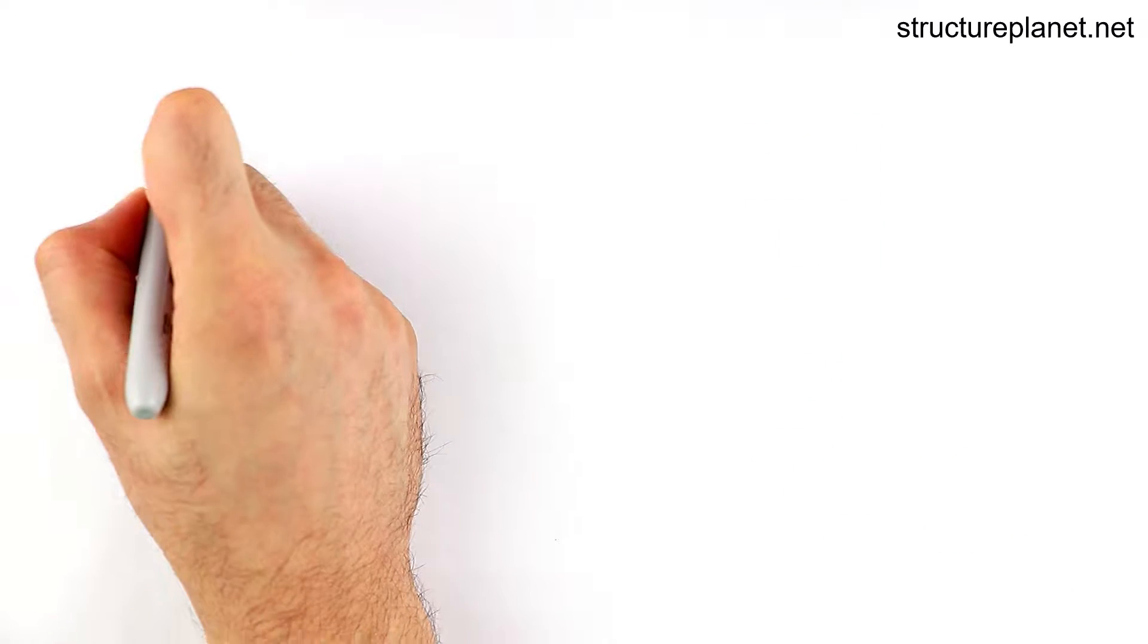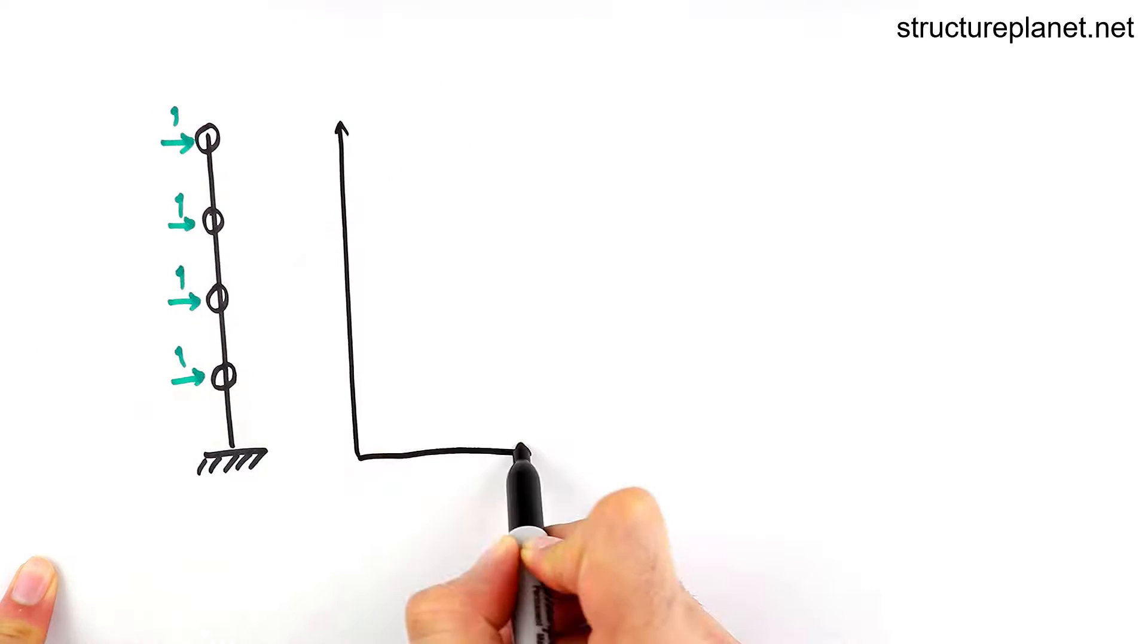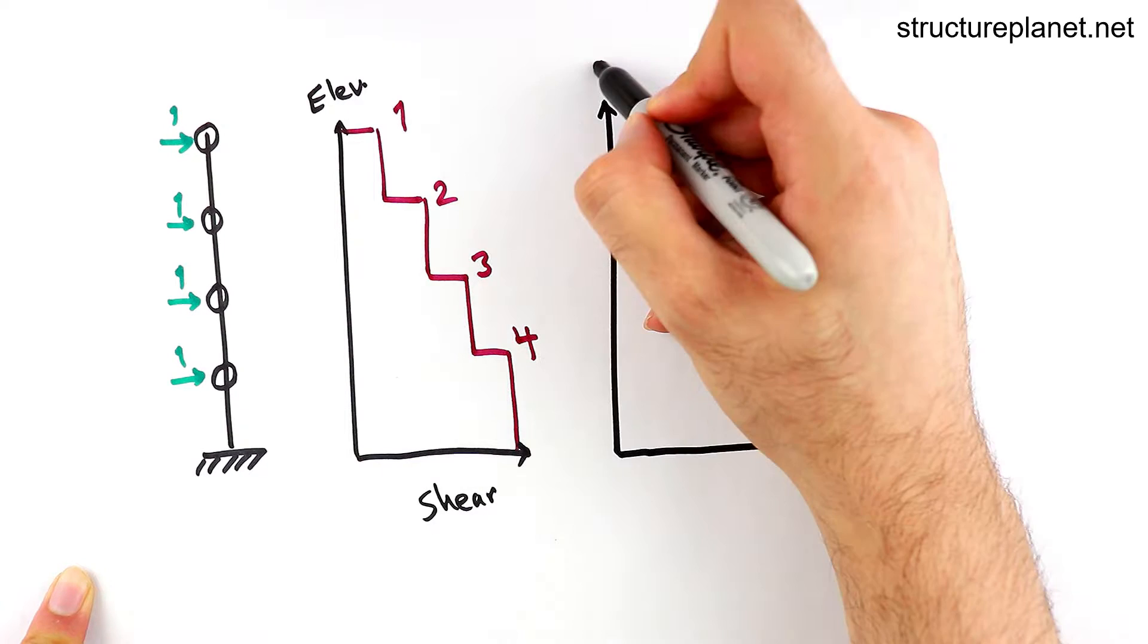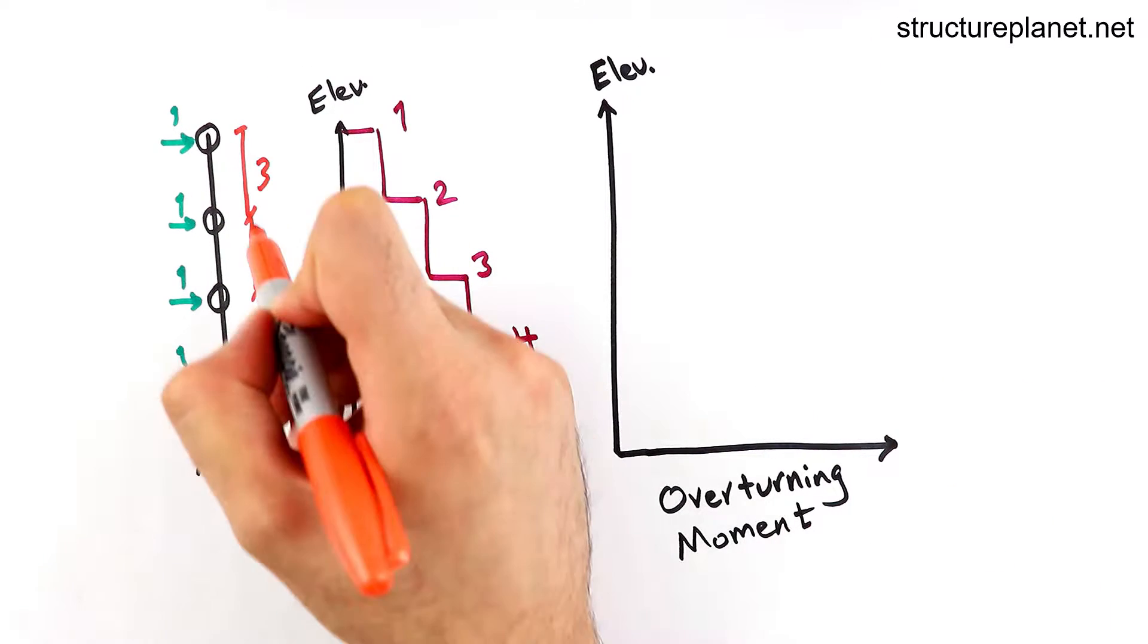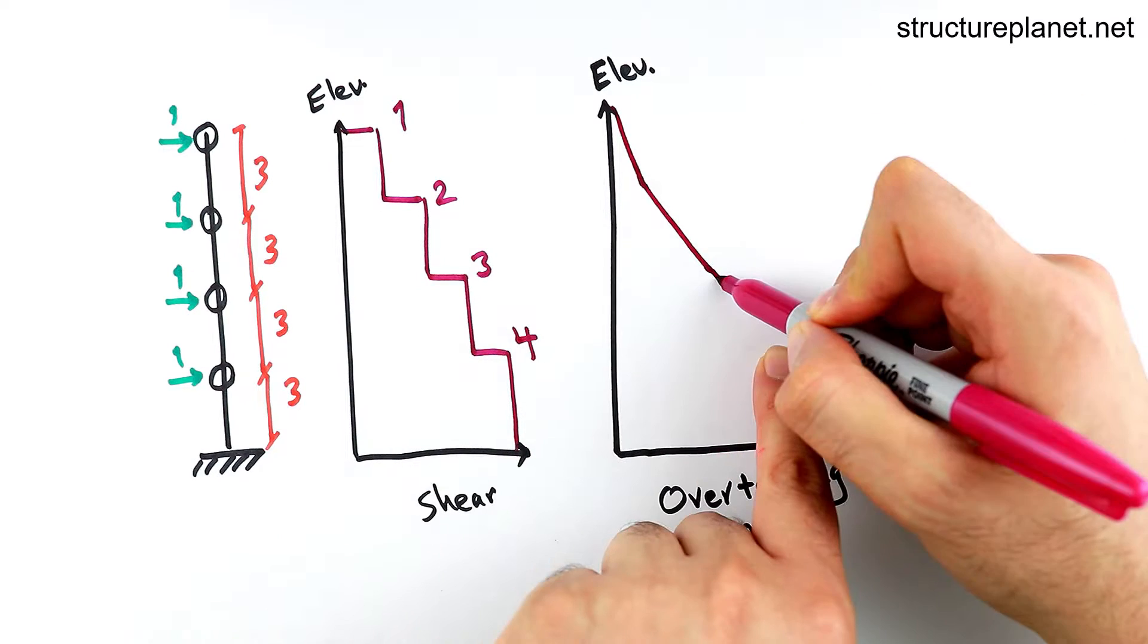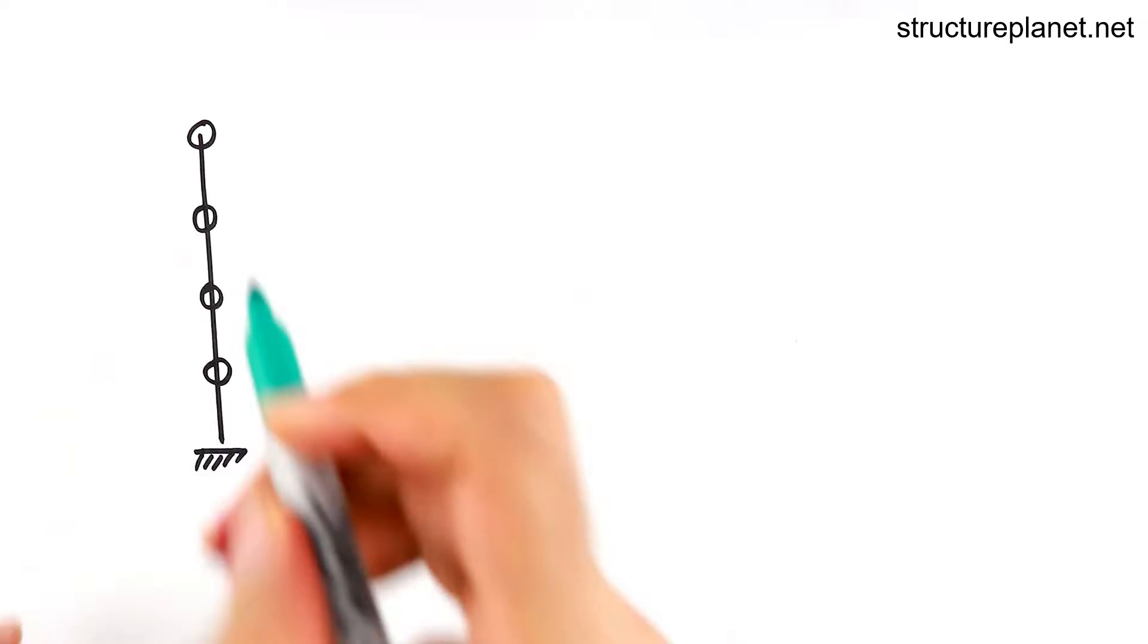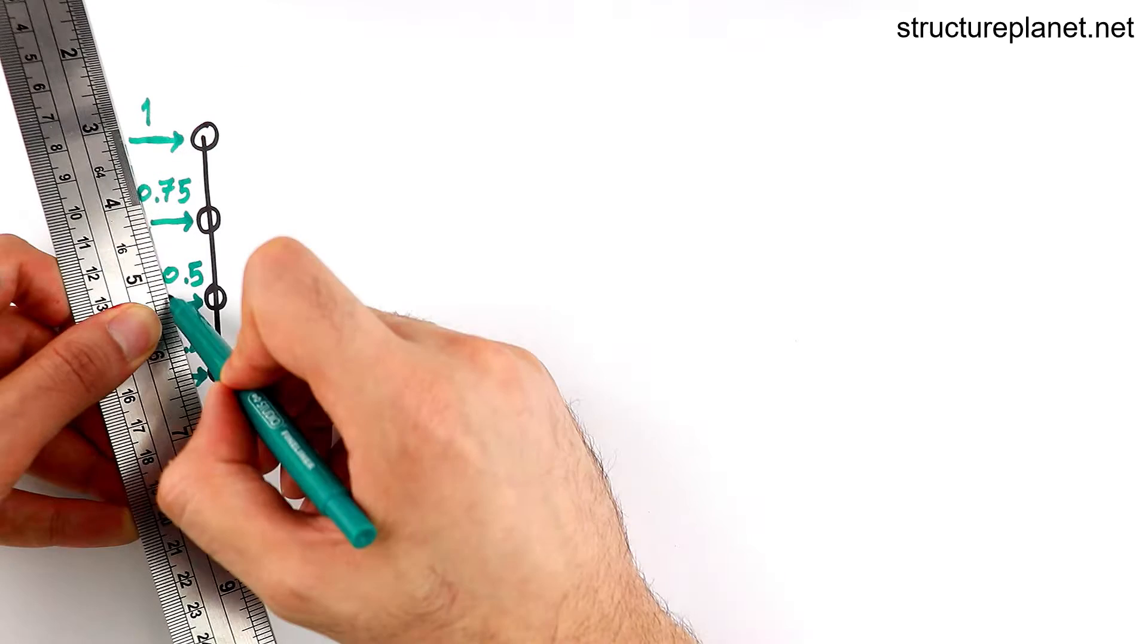Under lateral loading, not only the building will sway but it will also be subjected to shears and overturning moments throughout the height and into the lateral force resisting elements on each floor. These forces for a simple constant load at each story will look like this and for a triangular distribution it will be something like this.